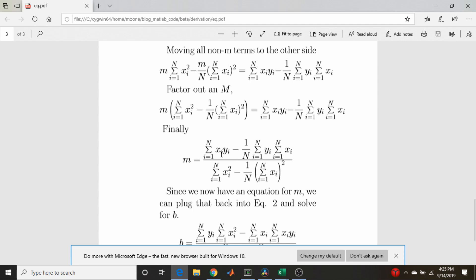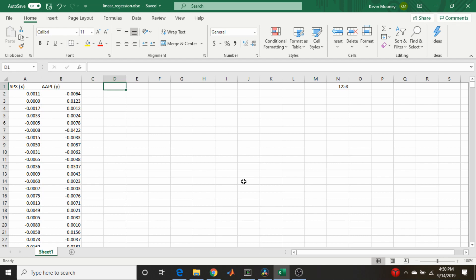So we're going to need a column for the product of x and y and a column for x squared. So let's put those into our spreadsheet now. So back to Excel here. Let us make a column and we'll call it just x times y. And we'll make a column called x squared.